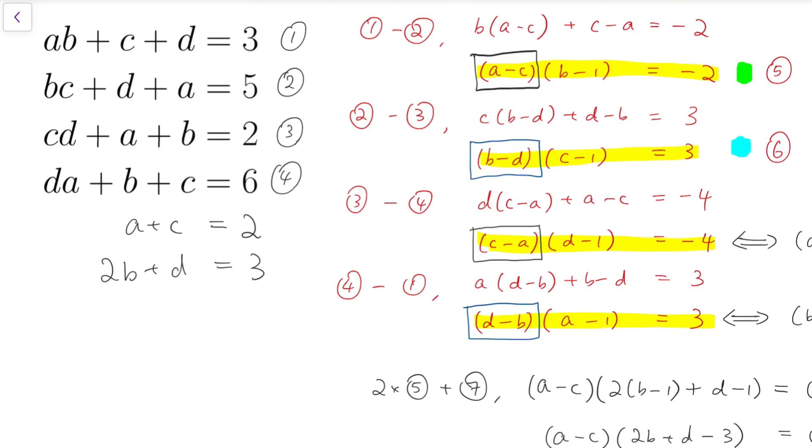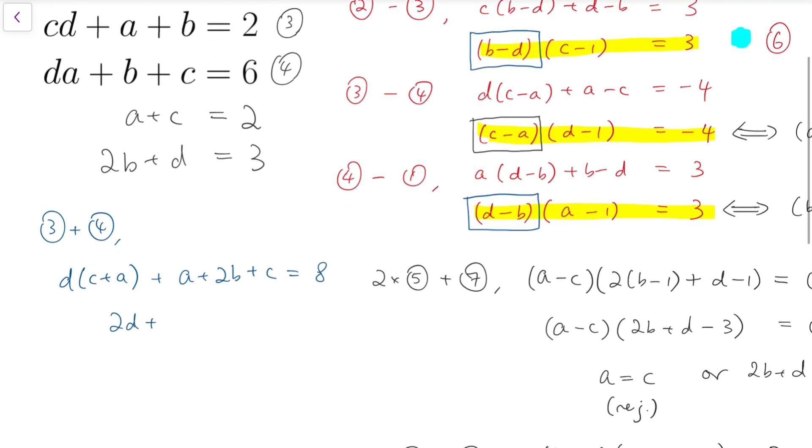To further proceed, I'm going to just add the third equation and the fourth equation. In fact, I'm just randomly picking two consecutive equations. So adding up, we have d times c plus a plus a plus 2b plus c equals 8. Now for this, we have a plus c equals 2. So I can quickly simplify this. And we have 2d plus 2 plus 2b equals 8. So simplifying, we have d plus b to be equal to 3.